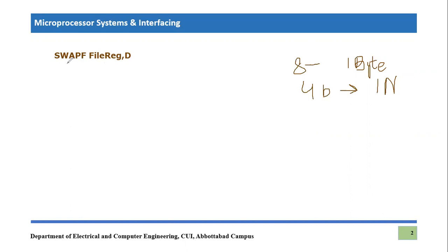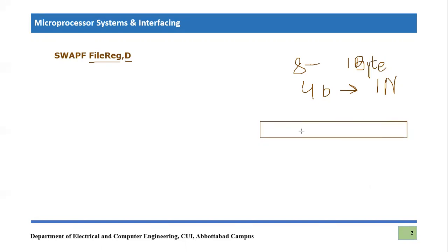SWAPF means it is going to swap the file or file register that we mention. We also have a destination bit — if we mention it as file, the new content will be saved in the same file register. If we mention it as W, the modified result is put into the working register. First, understand what is being swapped: we are swapping the two nibbles present in the file register.